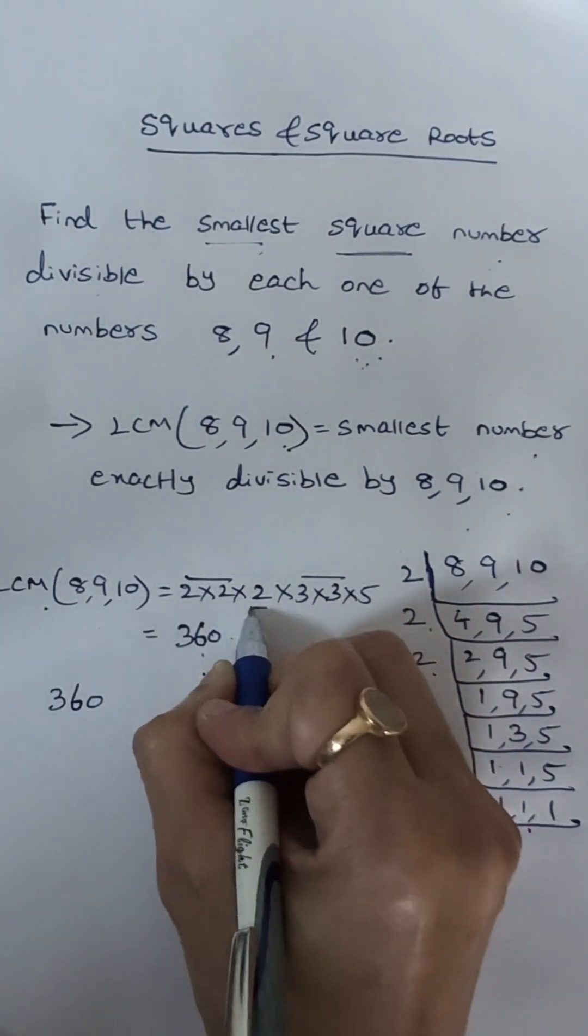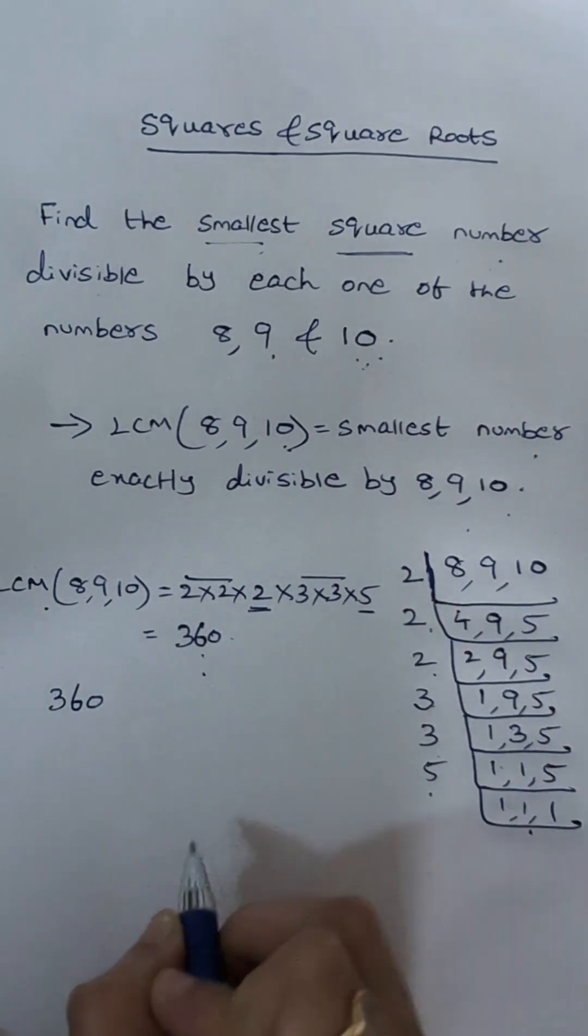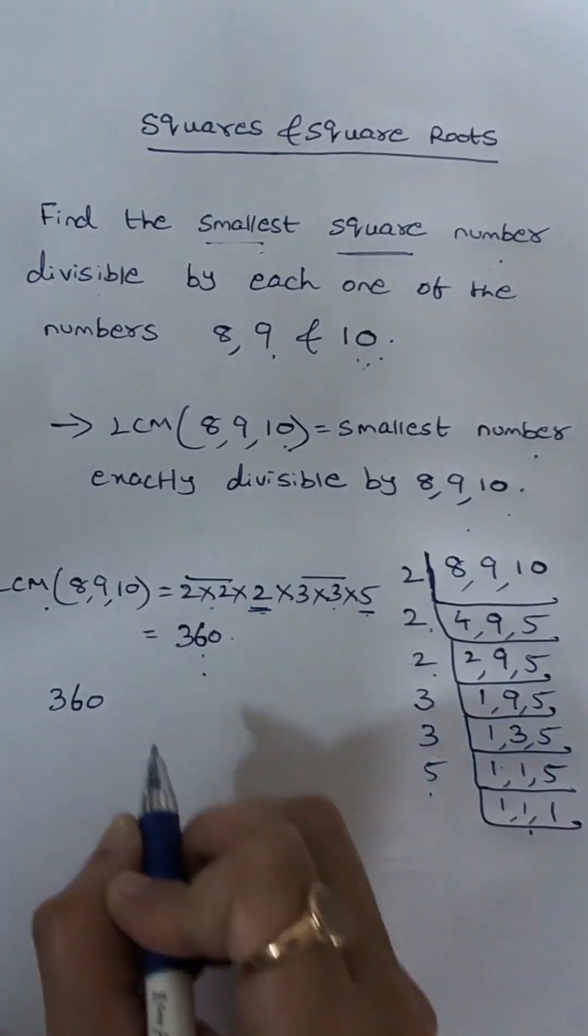Now as we can see the prime factors 2 and 5 do not occur in pairs.